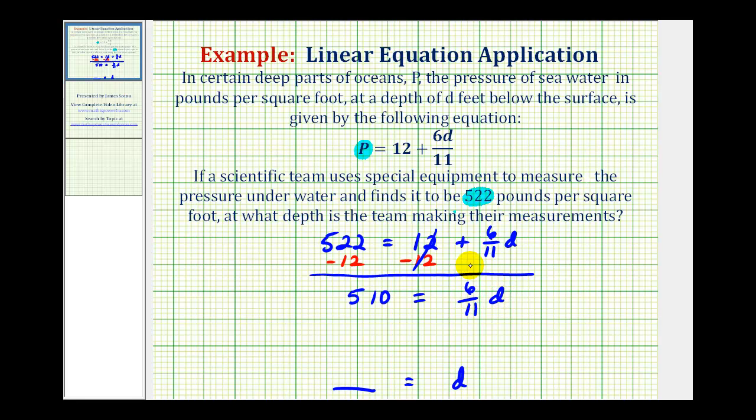Now this means 6 11ths times d, so we might be thinking that we should divide both sides by 6 11ths, but remember, instead of dividing by a fraction, we multiply by the reciprocal. The reciprocal of 6 11ths would be 11 6ths, so we're going to multiply both sides of the equation by 11 6ths.